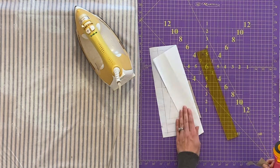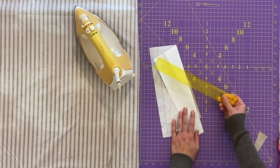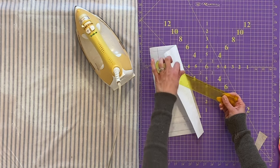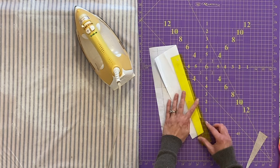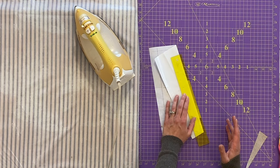I'm using my add a quarter ruler to trim my seam allowance down to a quarter of an inch. You can do this with any ruler but I really like the add a quarter because it has this little ledge that just sits against the paper so I don't really have to look and figure it out. I just can pop it right on there and check.